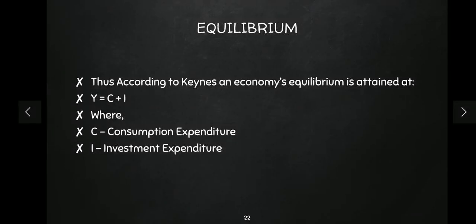Hi everyone, welcome to the channel. Today in this video we are going to continue further. In the last video we covered Keynesian theory of employment and output, and Keynes gave a very interesting model which we call effective demand theory. Those who have not seen that video, please go and see it first. Now, for simplicity, we are only including households and business enterprises — so according to Keynes, aggregate demand is consumption plus investment.